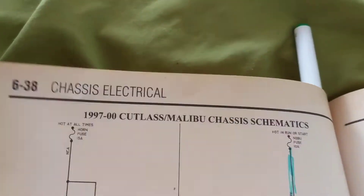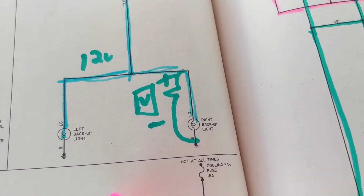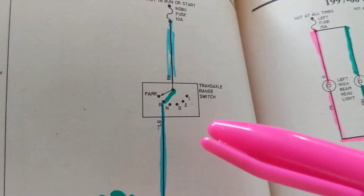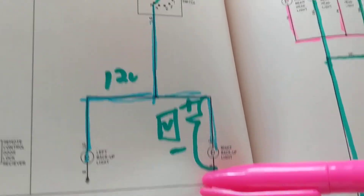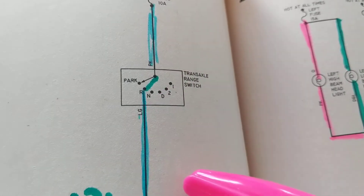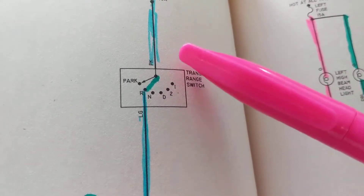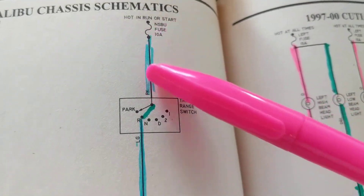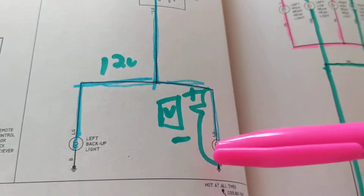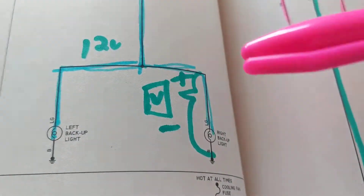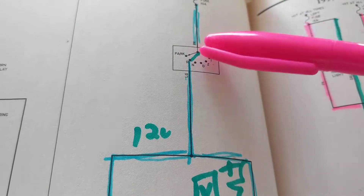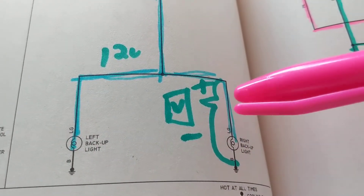Now one more — a simple reverse lights circuit. Which position do I have to have this switch in to light these bulbs? Technician A says one or two, Technician B says neutral — they're both wrong; neither is right. It has to be in reverse. That's why they're called reverse or backup lights. How much voltage should I measure? 12 volts — no voltage drop across the switch or the fuse, so 12 volts at the bulbs.